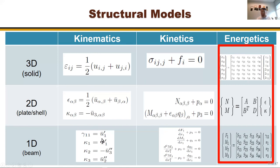The constitutive relations — the energetics part — are not discussed much in finite element or structural mechanics courses, but they are important, especially with advances in materials technology. How to get the material properties and constitutive relations is critical. The kinematic and kinetic equations are established, programmed into Abaqus, ANSYS, and all those codes. If you have a new material, you need a new UMAT — user material subroutine — and everything else is already programmed.